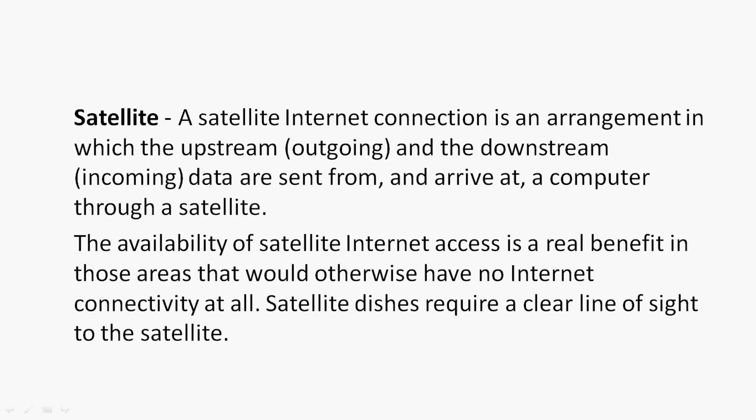Next is Satellite. A satellite internet connection is an arrangement in which the upstream (outgoing data) and the downstream (incoming data) are sent from and arrive at a computer through a satellite. The availability of satellite internet access is a real benefit in those areas that would otherwise have no internet connectivity at all. Satellite dishes require a clear line of sight to the satellite.